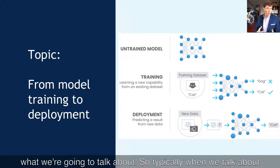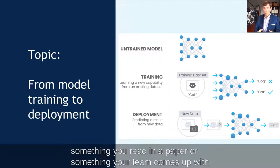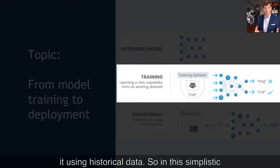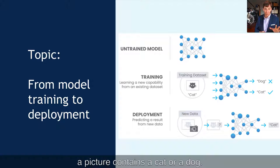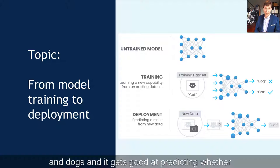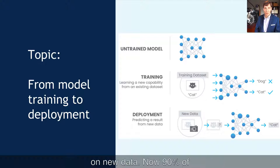First, you take some sort of untrained model — maybe something you download off a library like Scikit-learn, something you read in a paper, or something your team comes up with. Second, you take that model and train it using historical data. In this simplistic example on the screen, we're training a computer vision algorithm to recognize whether a picture contains a cat or a dog. Step three, you take that algorithm and deploy it into your environment to make predictions on new data.